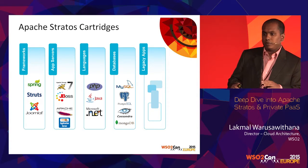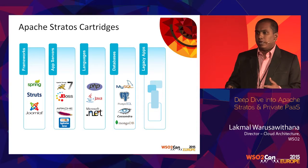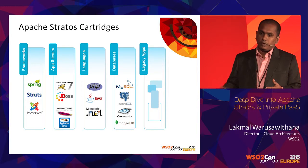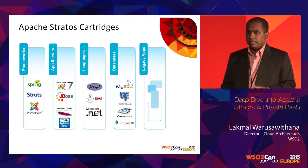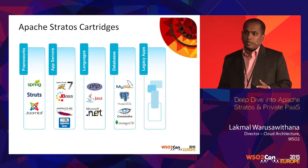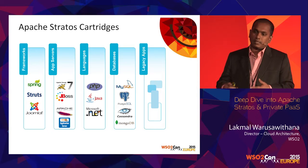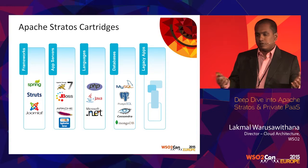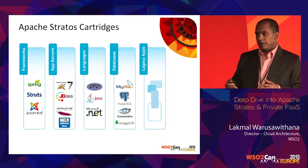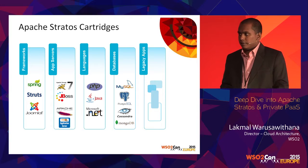With this model, you can bring any legacy application into the cloud without making any changes. You put the cartridge agent with your legacy application, make it an image or Dockerfile, and deploy it to the cloud. Then you get all the benefits like scaling up and down, and artifact distribution across multiple clusters — all these features from Stratos underneath as a platform as a service.